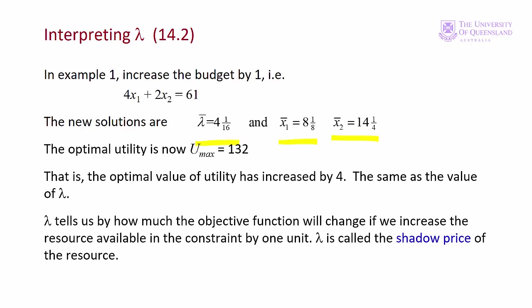Lambda is called the shadow price of the resource, where the resource is the value on the right hand side of the constraint. I'll explain where the term shadow price comes from and then we'll see why lambda is what it is.